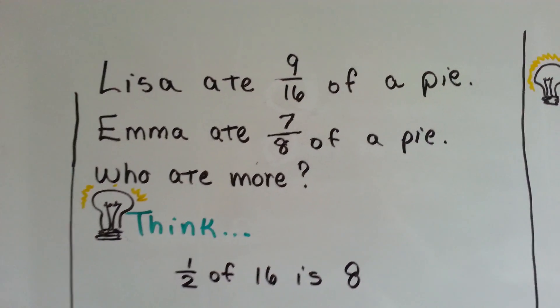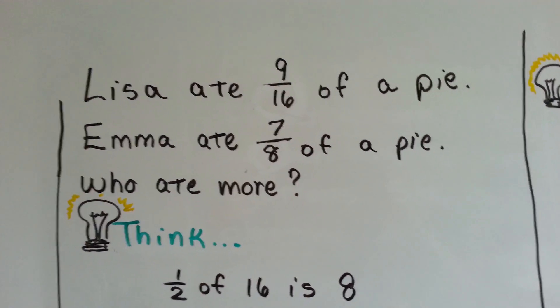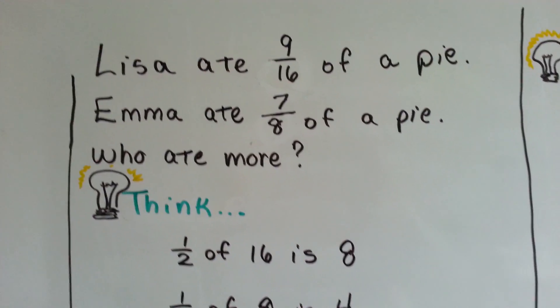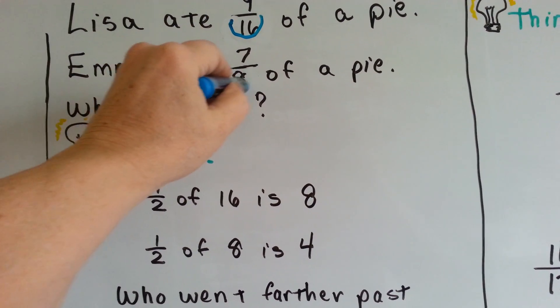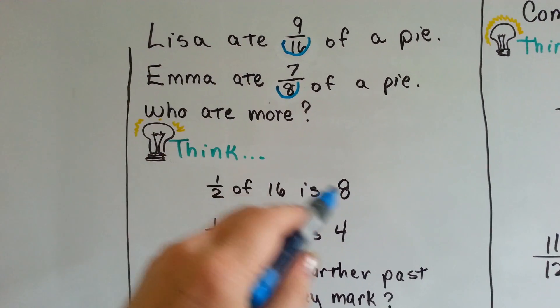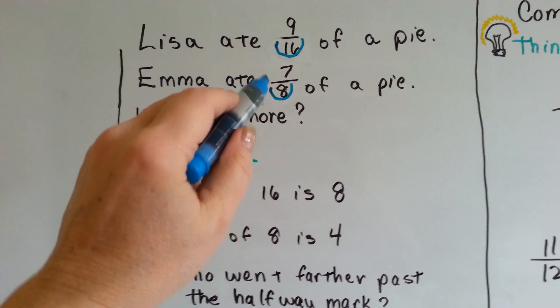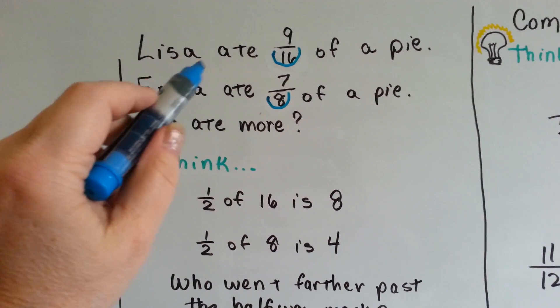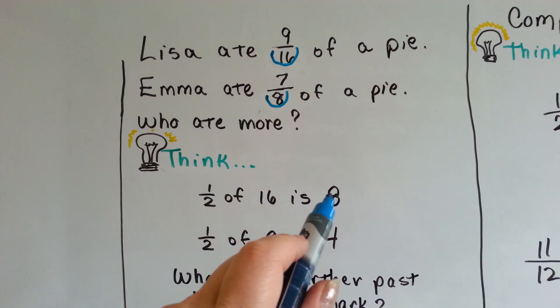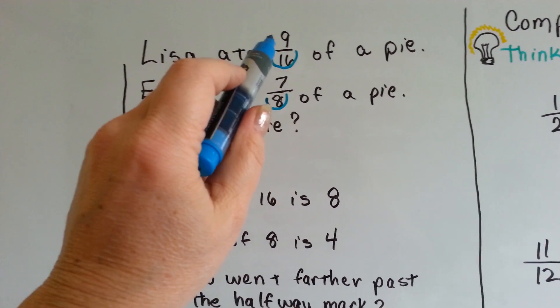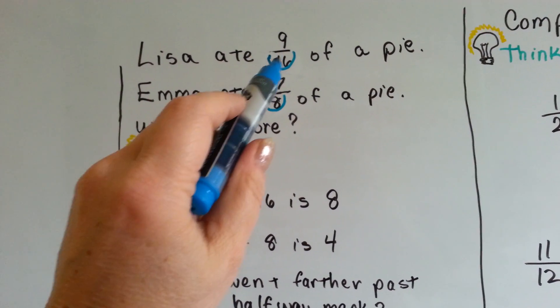Lisa ate 9 sixteenths of a pie, and Emma ate 7 eighths of a pie. Who ate more? Half of 16 is 8, half of 8 is 4. For Lisa to have eaten more than half, she would have had to have eaten more than 8 pieces. Did she? Yeah, she did. She ate 9 of the 16 pieces.